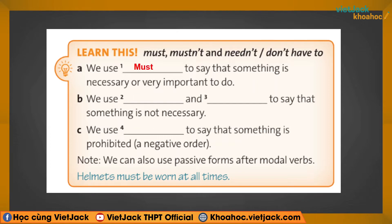Đầu tiên, we use 'must' to say that something is necessary or very important to do. Khi dùng 'must', các bạn chỉ một cái việc rất cần thiết, rất quan trọng. Tiếp theo, we use 'needn't' and 'don't have to' to say that something is not necessary — mình không cần phải làm nữa. Và cuối cùng, we use 'mustn't' to say that something is prohibited — cấm không được làm gì đó.